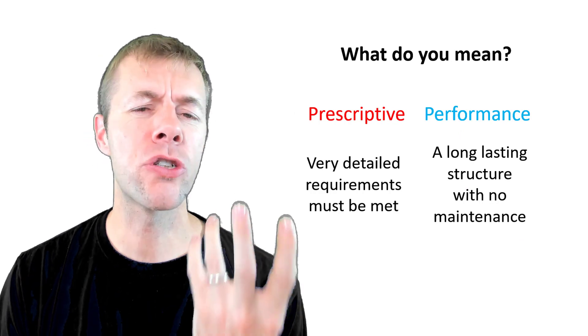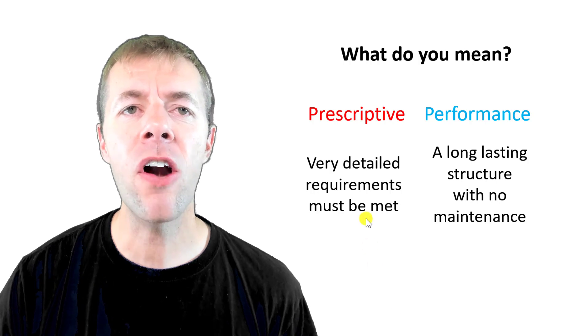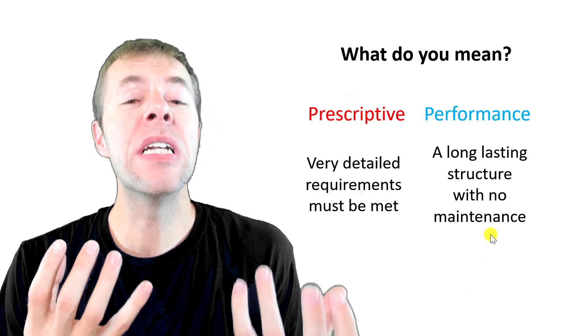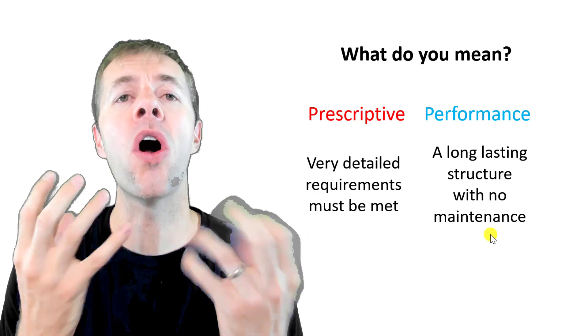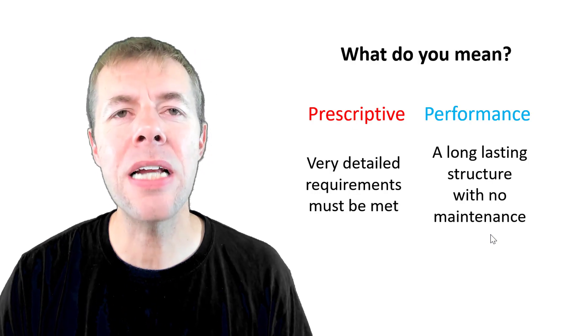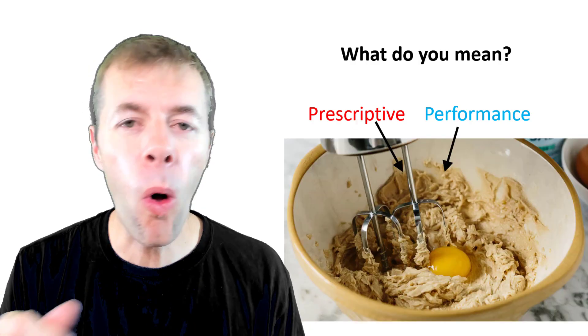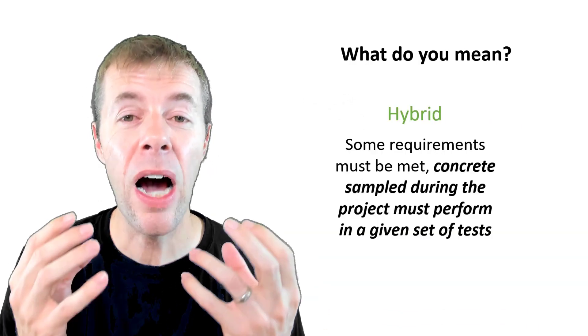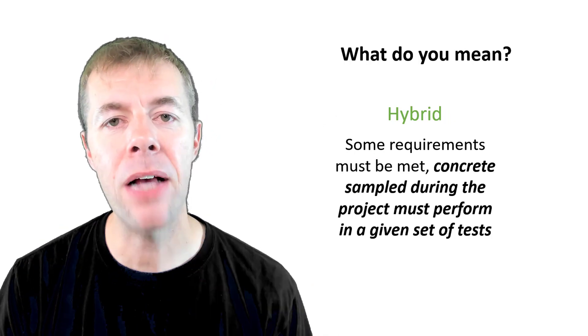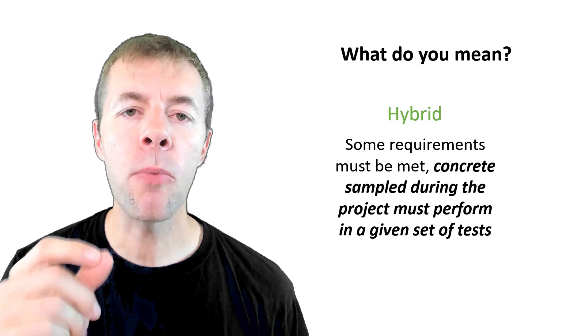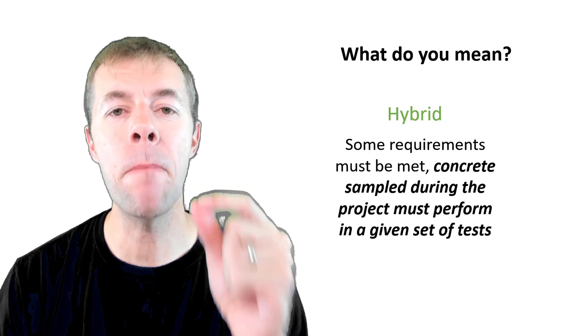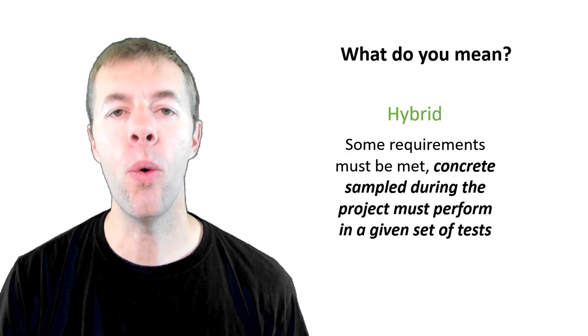I'm talking about prescriptive specifications or specifications that give very detailed requirements that must be met. Performance specifications ask for just what you need, right? A long lasting structure with no maintenance. How do I do this? Well, the idea is that you blend them. You put them in a bowl and you blend them up and you get something great in the end. A hybrid. It's not performance. It's not prescriptive. It's both. It takes the best of both specifications. Some requirements absolutely must be met, but then we're going to sample the concrete during construction and we're going to measure what we need. The tests that tell us what we need.